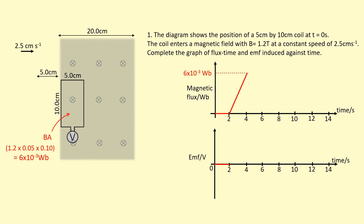Next we use Faraday's law to figure out the EMF induced during this stage because there was a change of flux. The number of coil turns N is one. The change in flux went from zero to 6×10⁻³ webers, so the change is 6×10⁻³. It took two seconds to enter because the coil travelled another 5 centimetres — the width of the coil — so the EMF induced is 3×10⁻³ volts.